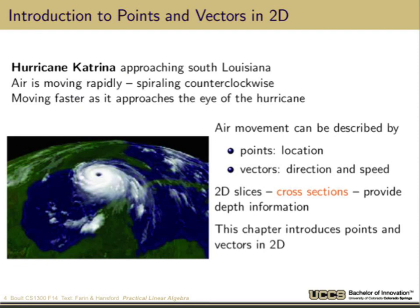Think back to Hurricane Katrina approaching southwest Louisiana. The air is moving very rapidly, spiraling because of the storm, and actually spiraling faster as it reaches the eye of the hurricane. The air movement in this kind of storm — you'll sometimes see it on the news — is shown as points where they can talk about the speed and direction of the wind. This is actually an example of a vector field. If we take 2D slices, even though it's a 3D storm, we can look at ground level and see wind direction and speed at each location. Different 2D slices at different heights provide different but very useful information.